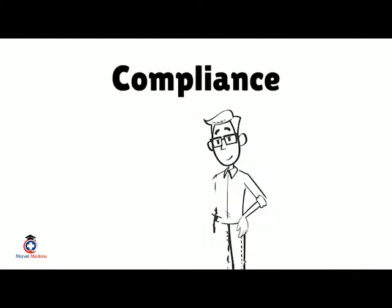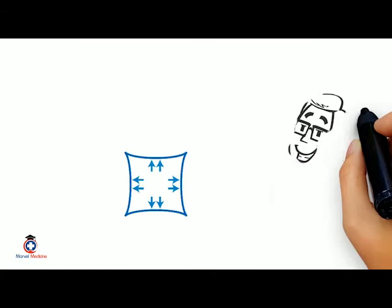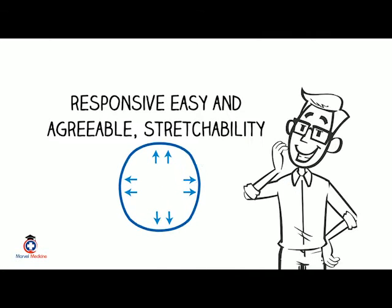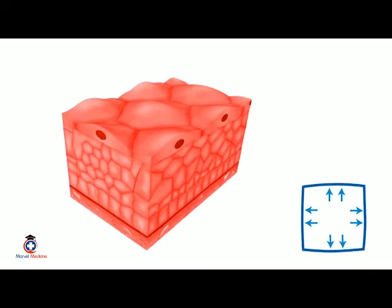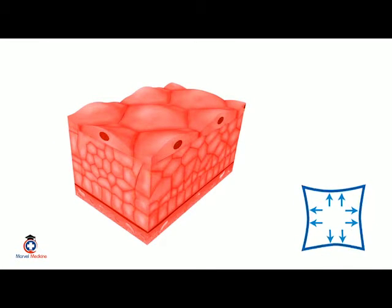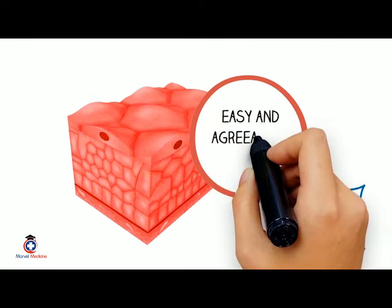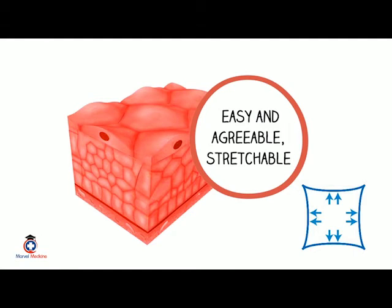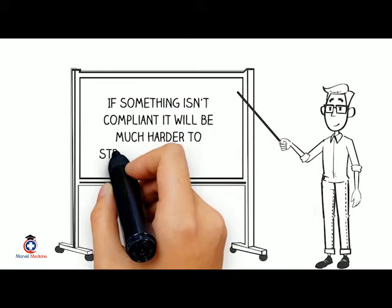In everyday English, someone who is compliant is easy to get along with — responsive, agreeable, stretchable. Apply that meaning to human tissue, like the lungs: if tissue is really compliant, it's easy to stretch and expand without using a lot of force. If something isn't compliant, it's much harder to stretch out and expand.